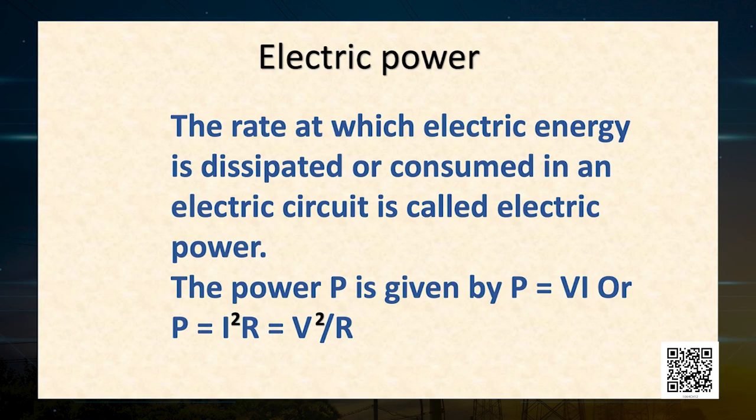You have studied in your earlier classes that the rate of doing work is power. This is also the rate of consumption of energy. The rate at which electrical energy is dissipated or consumed in an electric circuit is called electric power. The power P is given by the formula P equals VI — remember, it is the VIP formula. Or, it can also be written as power equals I squared R, which is also equal to V squared divided by R.